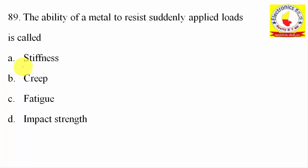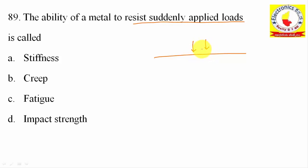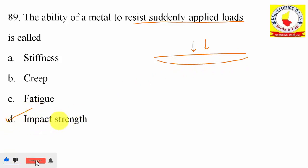89th question: The ability of a metal to resist suddenly applied loads is called impact strength. This is a very important property. Option D is correct.